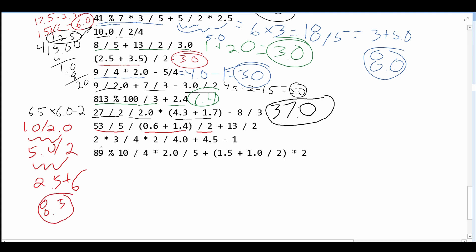Then we have 2 times 3, which gives us 6. Dividing by 4 gives us 1. Multiplying by 2 gives us 2. Then dividing 2 by 4.0 — writing this as 40 divided by 20.0 — gives us 0.5. We then have 0.5 plus 4.5 minus 1, which is 3.5. Adding that to our previous 0.5, our answer is 4.0.